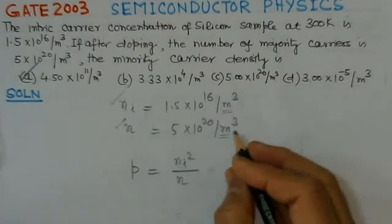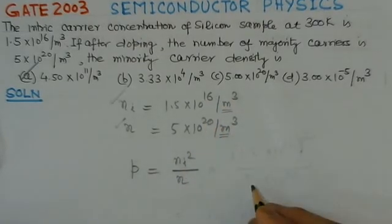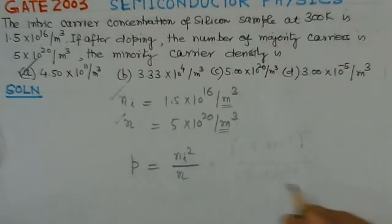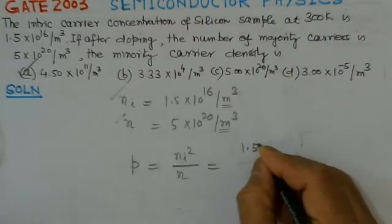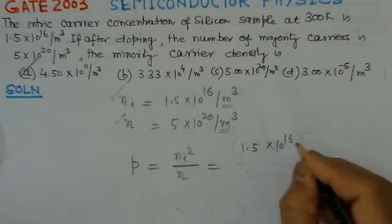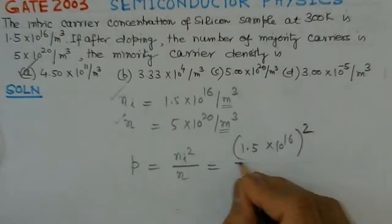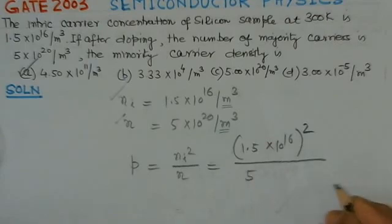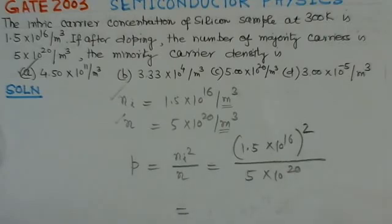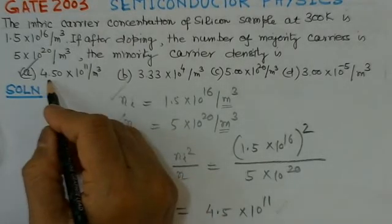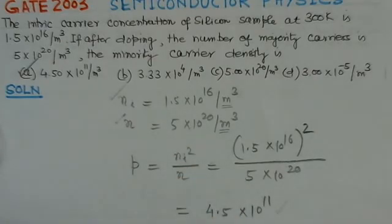Applying the mass action law: p = ni² / n. Here ni² = (1.5 × 10^16)² and n = 5 × 10^20. Simplifying gives p = 4.5 × 10^11 per meter cube. Option A is the correct option for this problem.